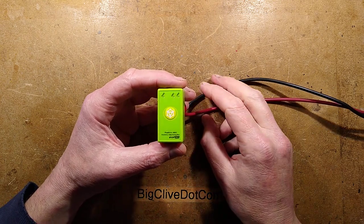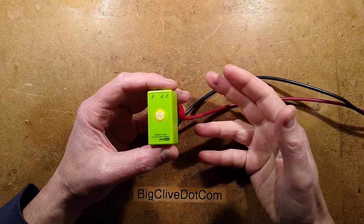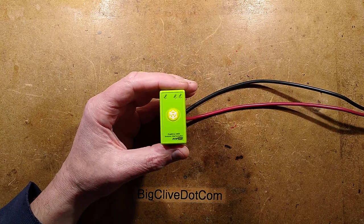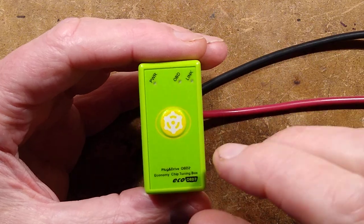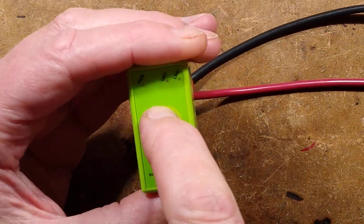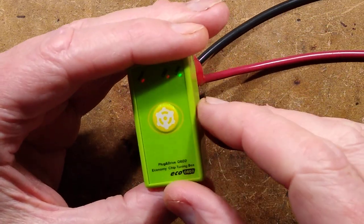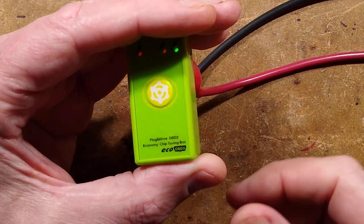Another OBD2 fuel saver. When I get my teeth into a subject, I occasionally just buy a few of the different versions available. And this one is quite stylish. It's actually got a button. You press the button and I'll just shield it so you can see the LEDs.